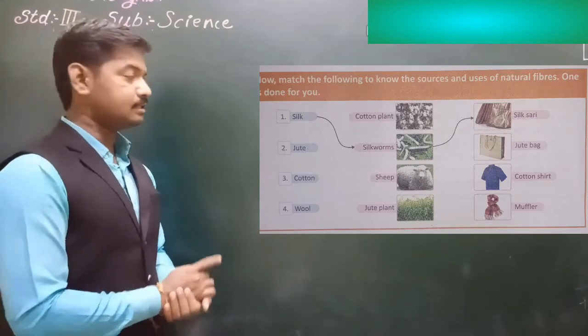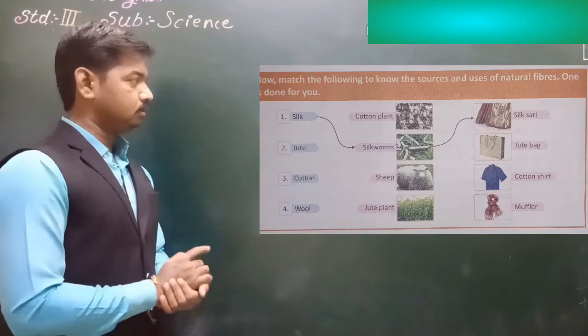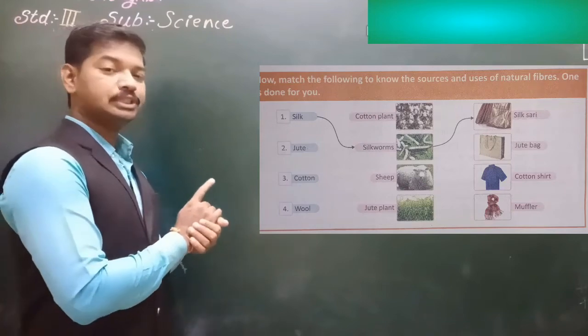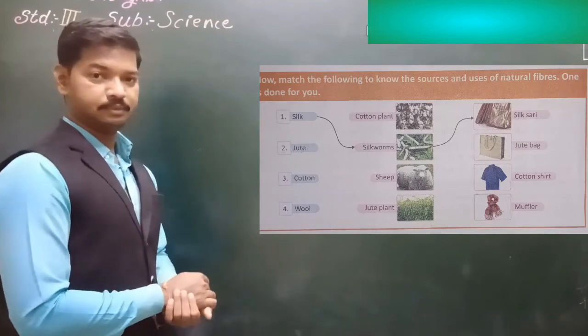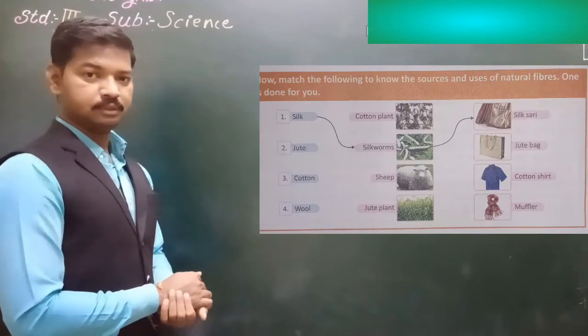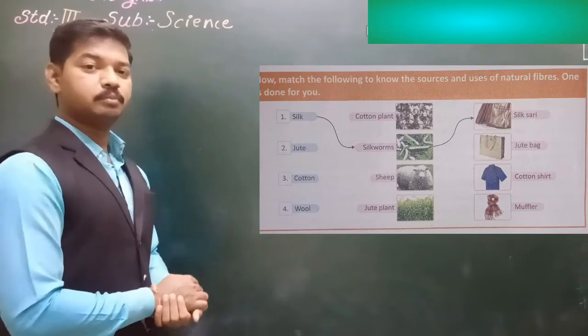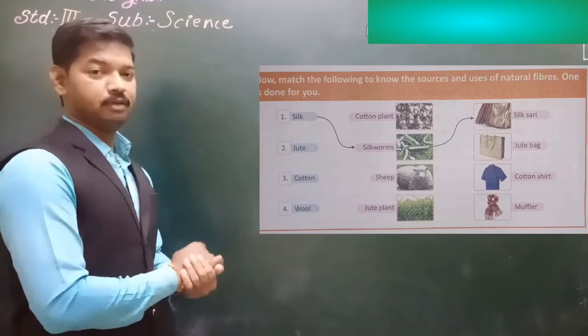Number four: wool. Wool is obtained from sheep, and wool is used to make woolen items.